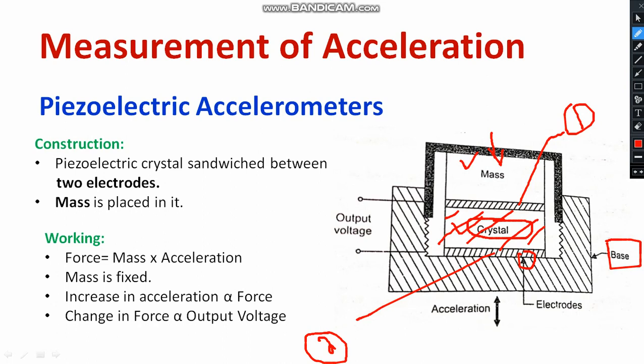The external body is connected to the base region. With respect to the movement of the external body, there are changes happening in the crystal — vibration or changes will be happening. With respect to changes in the crystal, the output voltage will be getting varied.